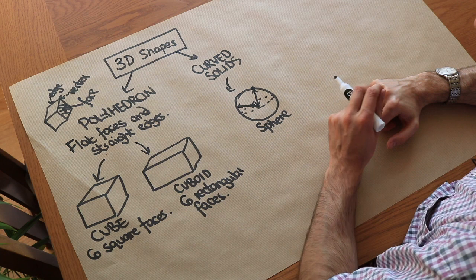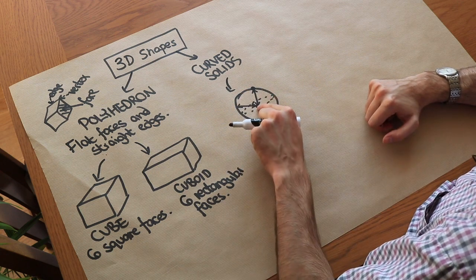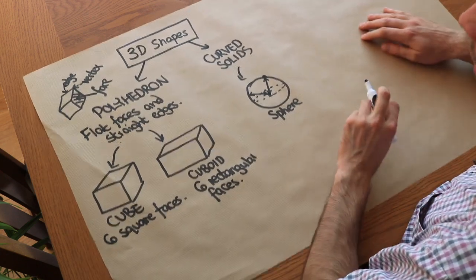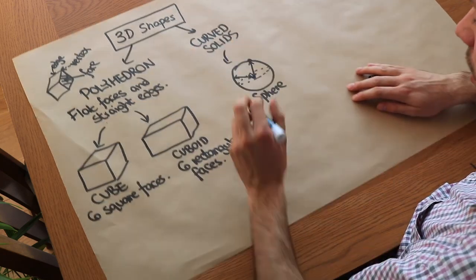Just like the definition of a circle is that any point on the circle is the same distance from the centre of the circle. Now we've got some types of shapes which could either be polyhedron or curved.